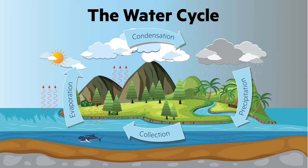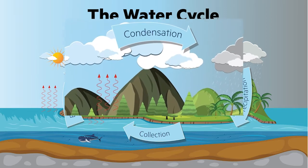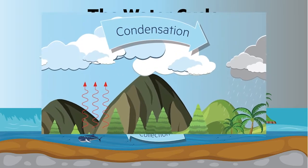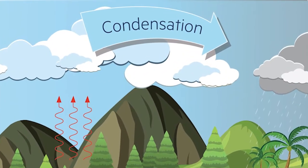The next part of the water cycle is condensation. When the gas molecules float upwards, they reach colder temperatures, which causes the molecules to move closer together again and form clouds.